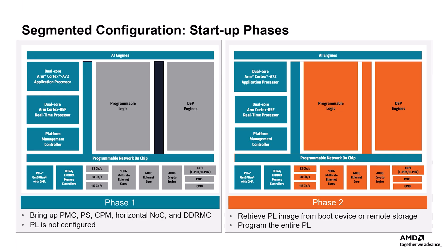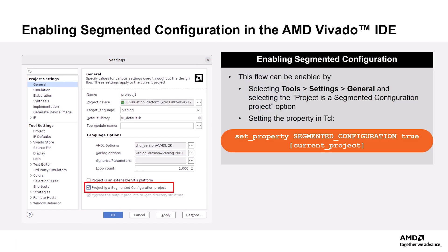This PL image is fetched from the boot device or from a remote storage location, providing the ability to retrieve PDI images dynamically over runtime software like U-Boot and Linux. To enable this flow in the Vivado IDE, the name Segmented Configuration can be seen throughout the Vivado flow only when the enabling parameter is set. To set this parameter, start by opening a Vivado project session. Once the project has been opened, set the project property by selecting Tools, Settings, General, and then selecting the 'Project is a Segmented Configuration Project' option. The property can also be applied using Tcl.